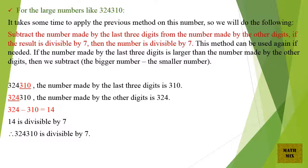For large numbers like 324,310, it takes some time to apply the previous method on this number, so we will do the following. Subtract the number made by the last 3 digits from the number made by the other digits. If the result is divisible by 7, then the number is divisible by 7. This method can be used again if needed.